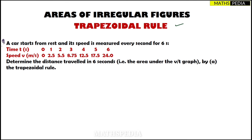Let us take a problem: a car starts from rest and its speed is measured every second for six seconds. We have time versus speed data. Time goes from 0 to 6 seconds — so the width of each interval is 1 second. We will draw the graph first.